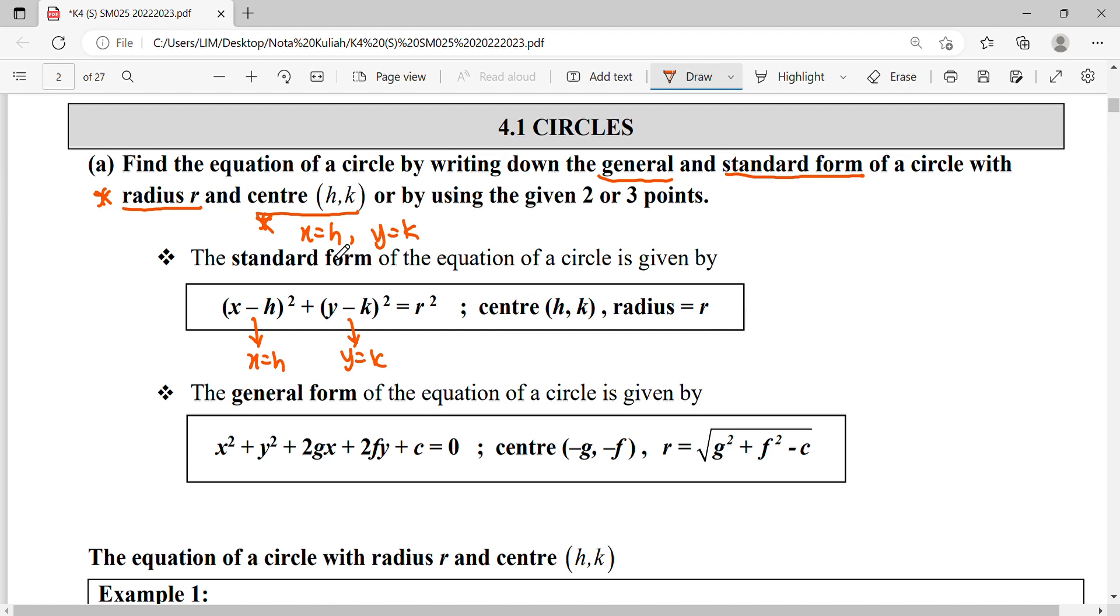This is the information from standard form. For general form, the (h,k) here represent (-g, -f). To find out the radius we use formula: g² + f² - c.